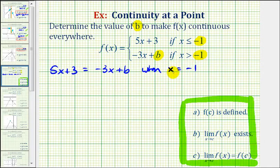So, for the first step, let's substitute negative 1 for x. So, we'd have 5 times negative 1, that's negative 5, plus 3, equals negative 3 times negative 1, that's 3, plus b.